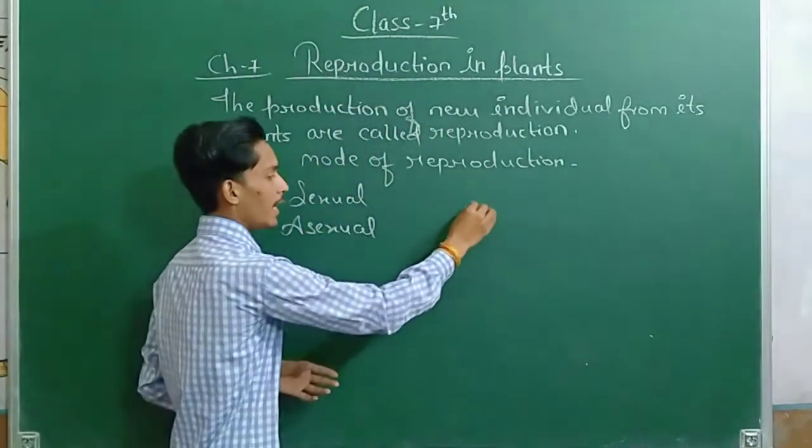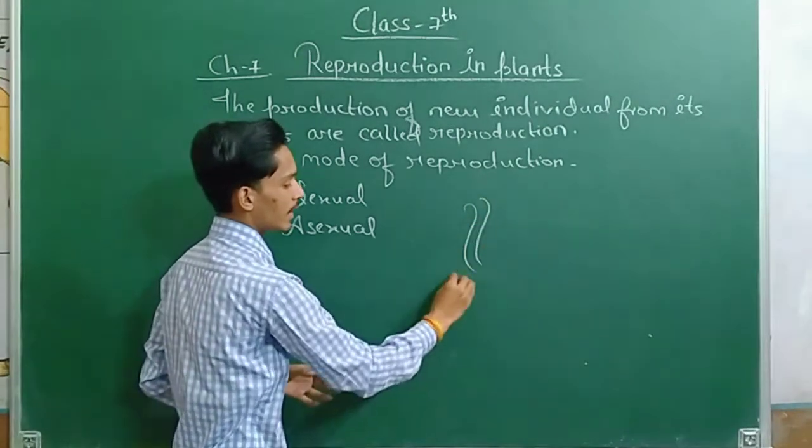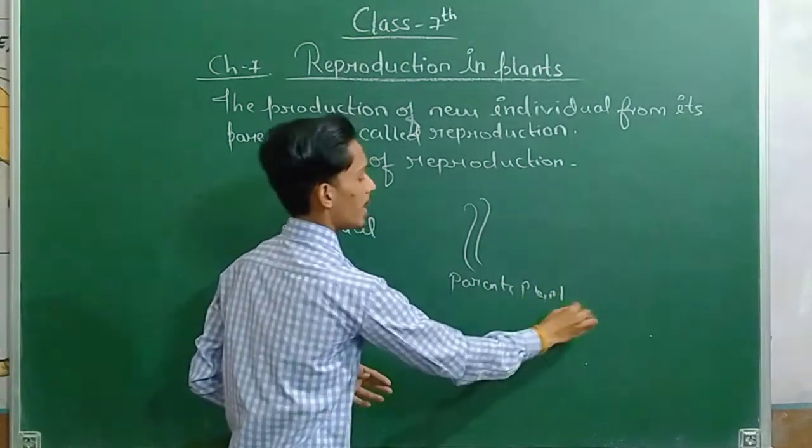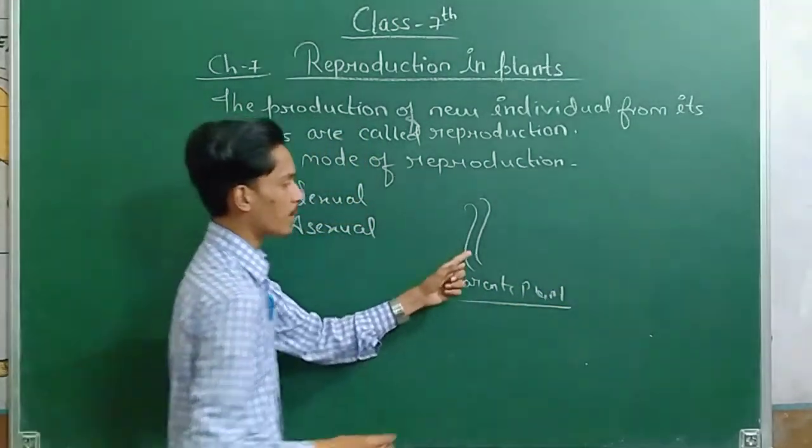So, a parent plant. From a parent plant, we can get different types. For example...